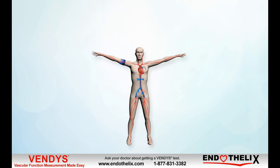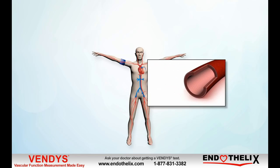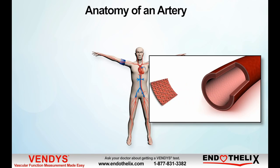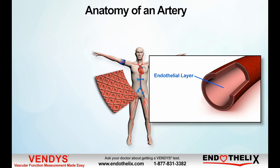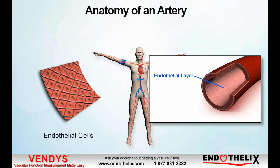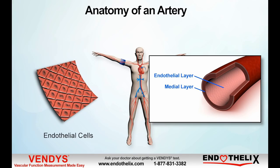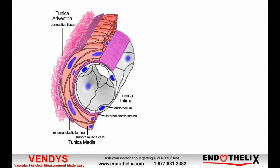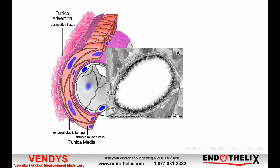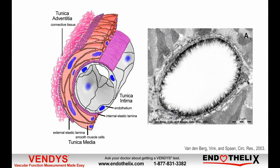Endothelial cells are the inner lining of blood vessels. Each artery has three layers: the endothelial layer, medial layer, and adventitial layer. The endothelial layer is the innermost layer — the so-called brain of the arteries — and is considered the most important layer.